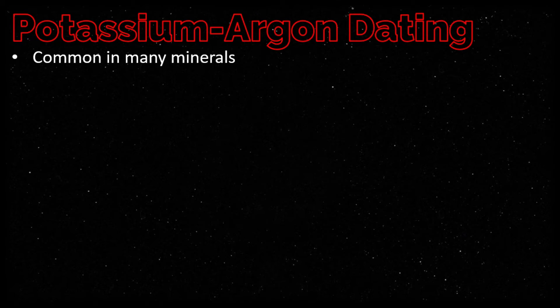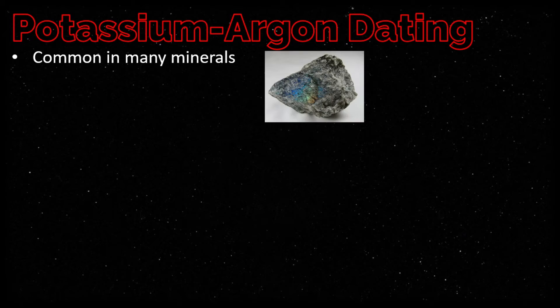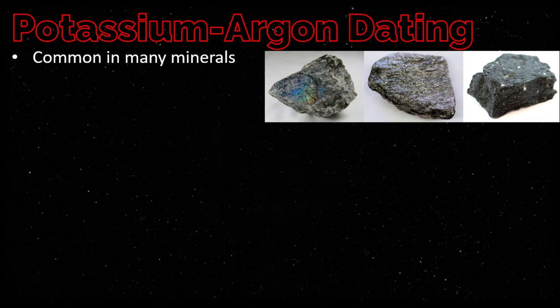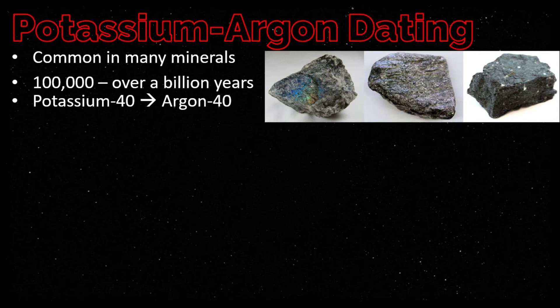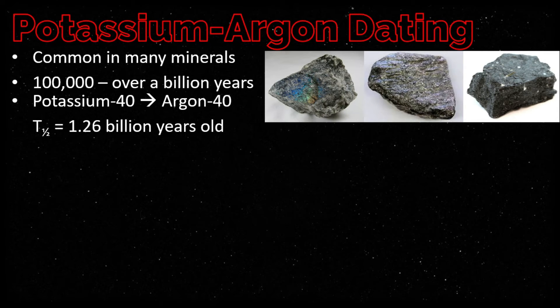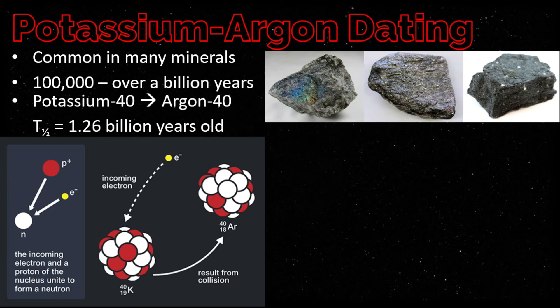Next we have potassium-argon dating. Potassium is common in many minerals such as feldspar, mica, and amphibole. With its half-life, the technique is used to date rocks from 1,000 years to over a billion years old. Potassium-40 decays to argon-40 with a half-life of 1.26 billion years. This is the symbol used for half-life.